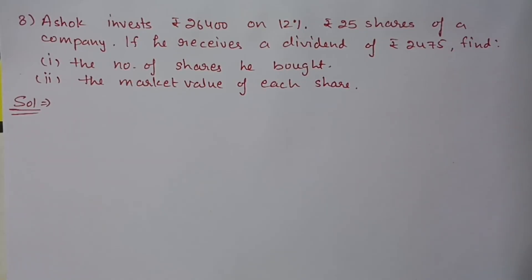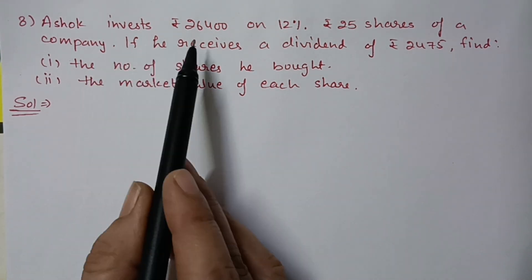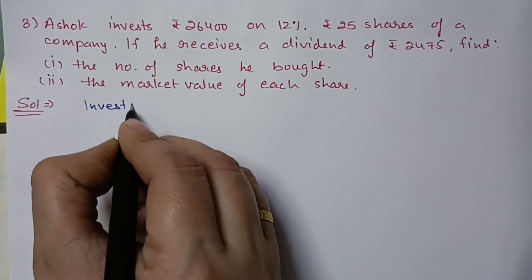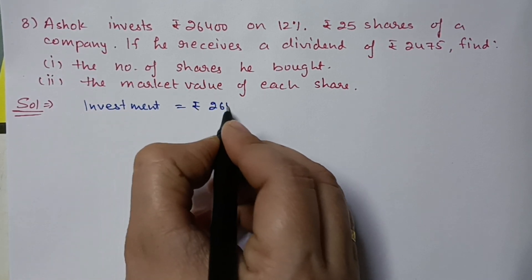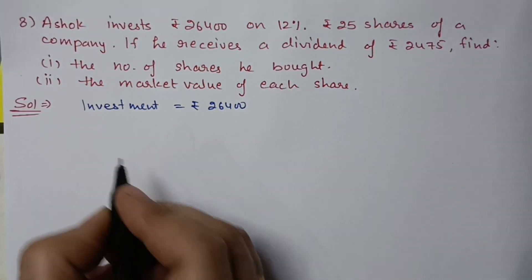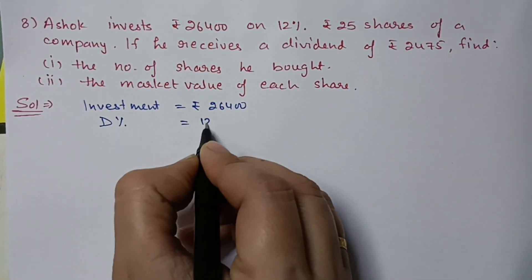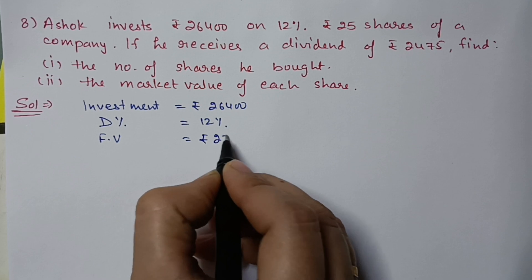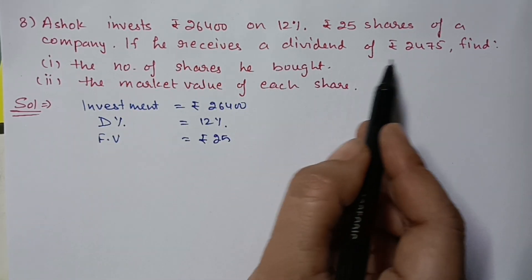Question number 8: Ashok invested 26,400 rupees in 12% rupees 25 shares of a company. If he receives a dividend of 2,475 rupees, find the number of shares he bought and the market value of each share. Investment is 26,400 rupees, dividend rate is 12%, face value is 25 rupees, and dividend received is 2,475 rupees.